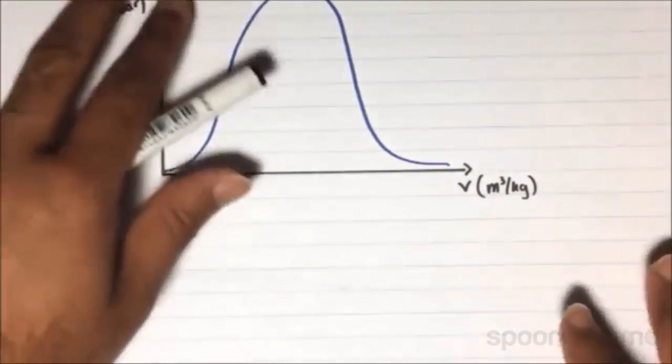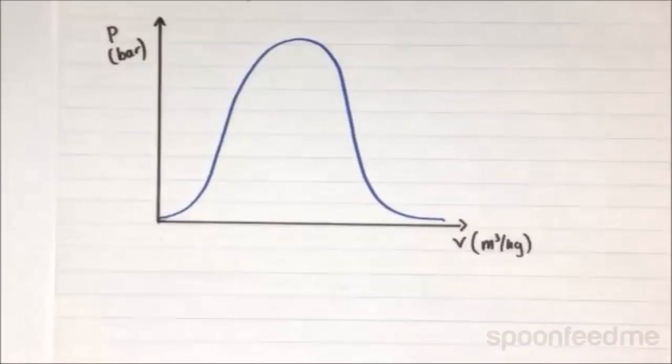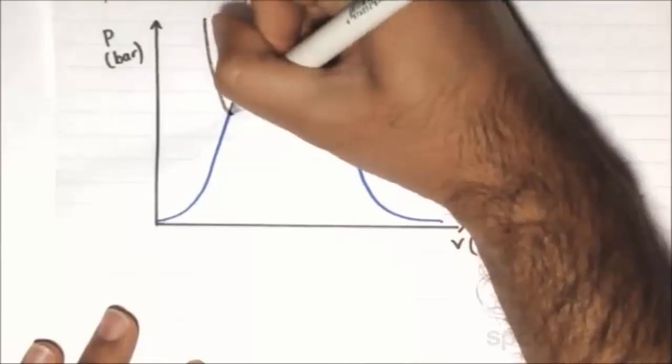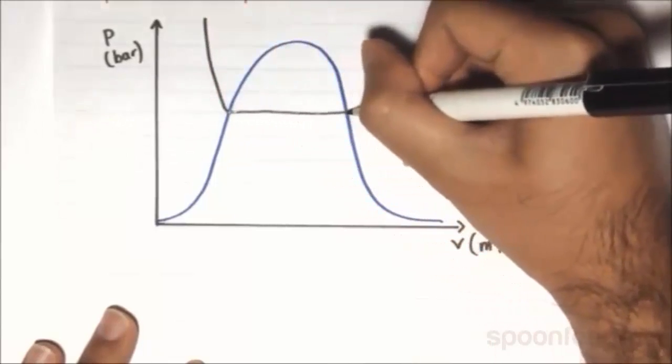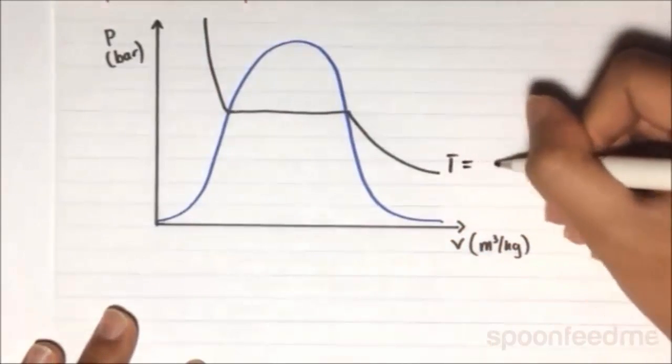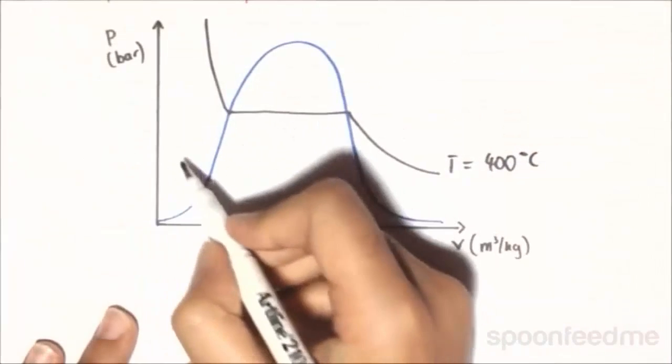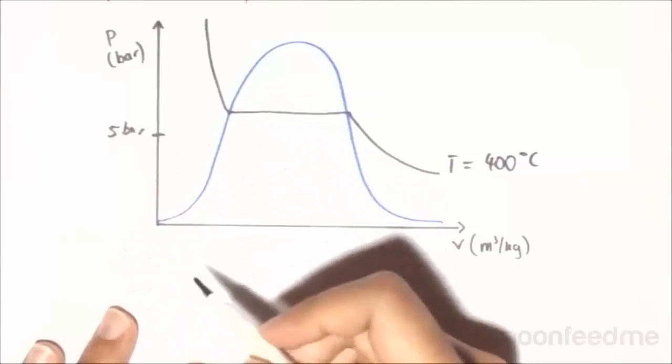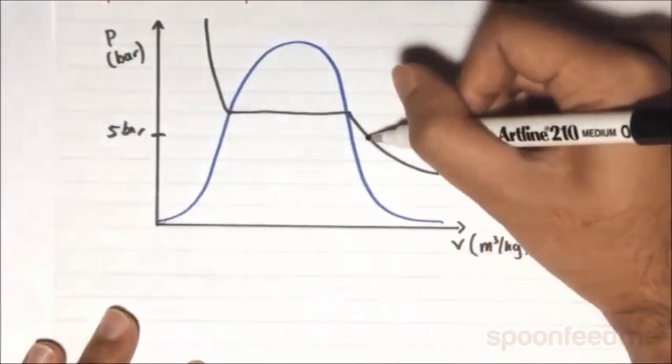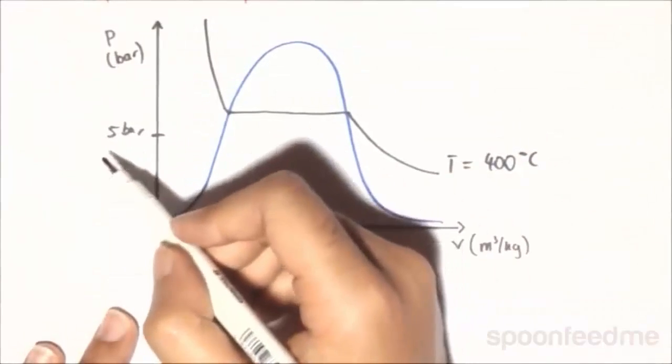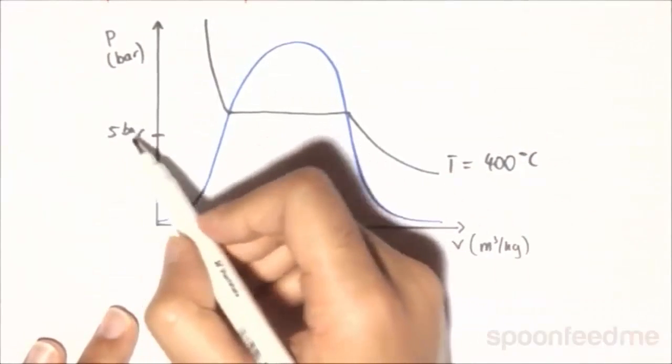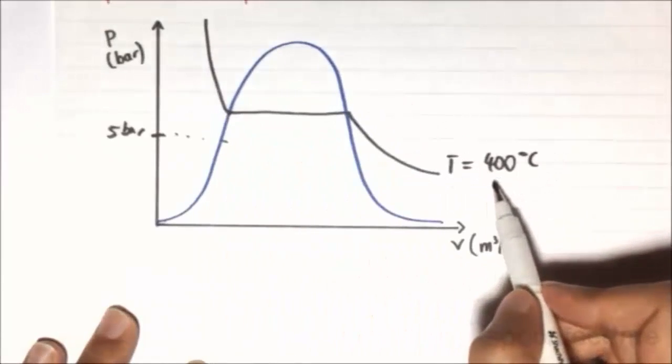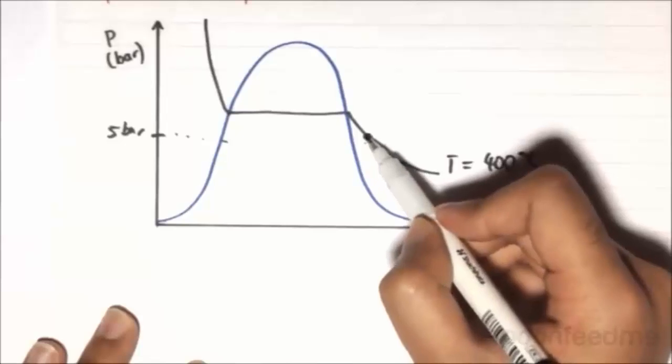So if we look at it here diagrammatically, we create the isotherm for 400 degrees Celsius. So let's say this is the isotherm for 400 degrees Celsius. And let's say that this is what corresponds to the 5 bar. So the state at which the fluid exists at this time is along the 5 bar line and on the T equal to 400 degree isotherm. So it will be right here.